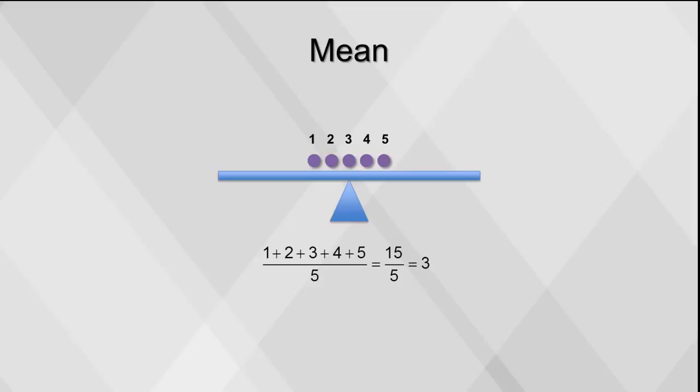In this example, the mean of the values 1, 2, 3, 4, and 5 is calculated by adding the values together to make 15, then dividing the values by 5. The mean of this group is 3.